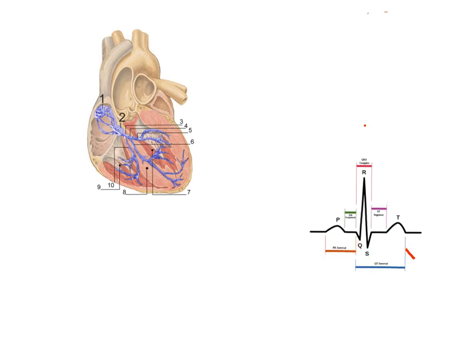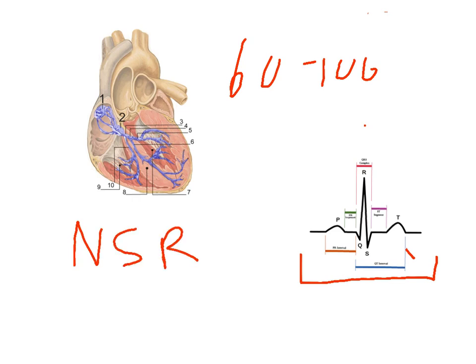And when I see this bump slash hump, or PQRST complex on the monitor, and I see that at a regular interval, and I see that occurring between 60 and 100 times a minute, we call that NSR, or a normal sinus rhythm.